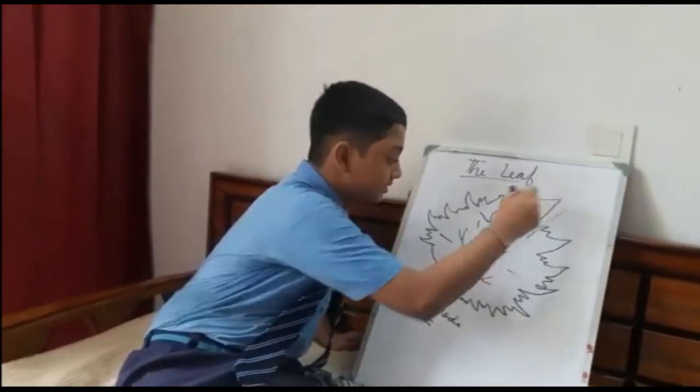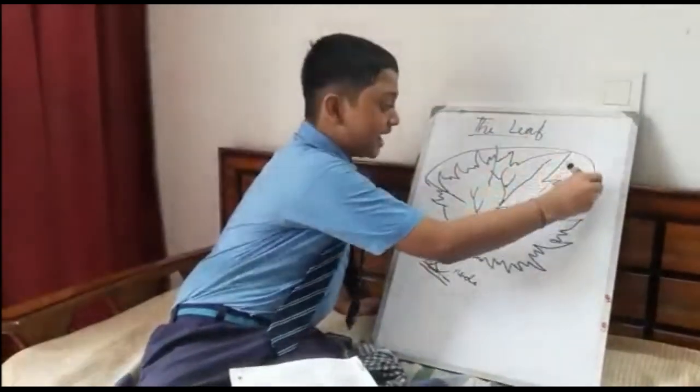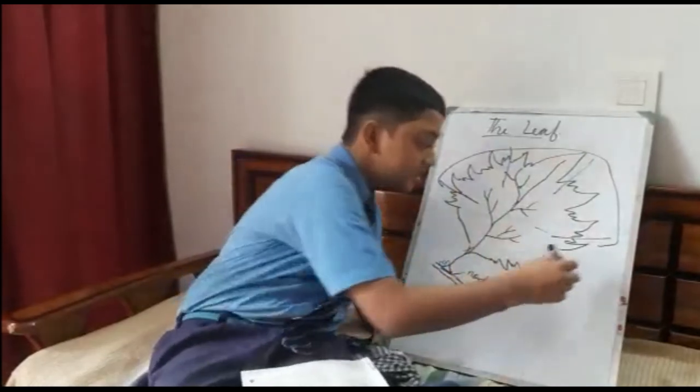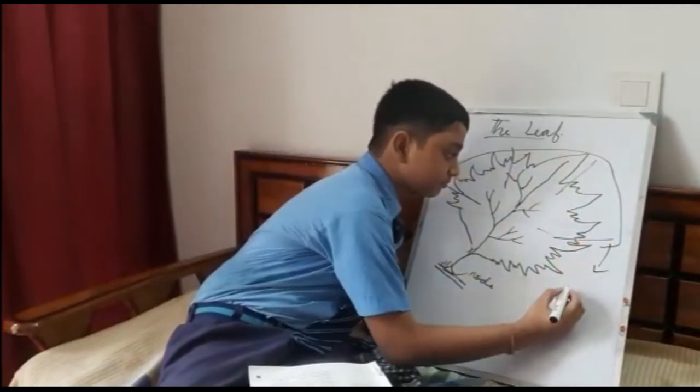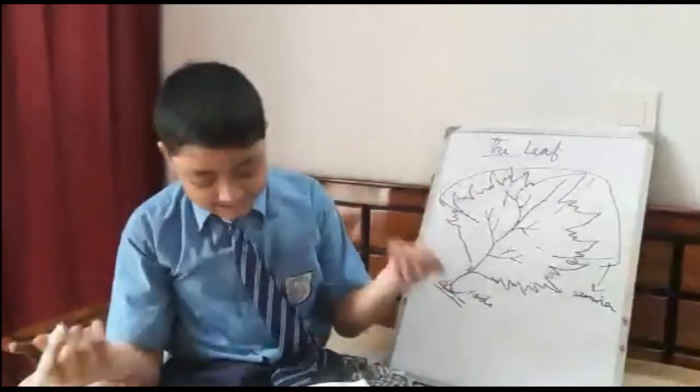Thin, flat, expanded part. You can see these flat parts on which you can see all the stems, branches and all that are known as lamina or leaf blade.